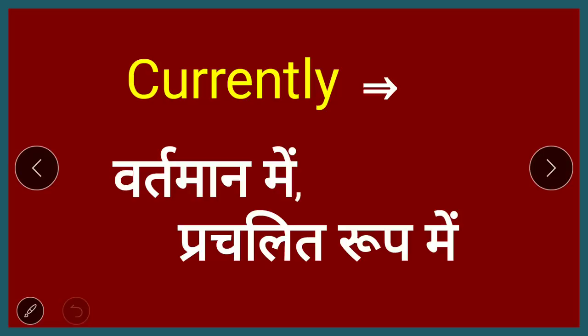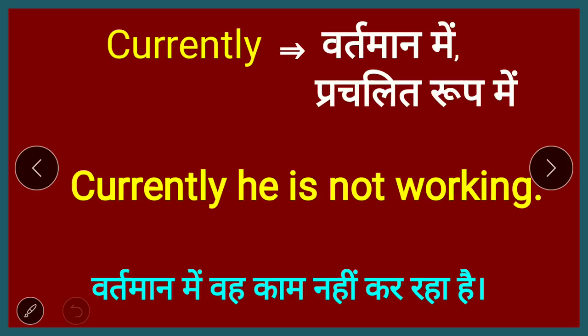The next word is 'currently,' meaning in the present moment. When you have to tell someone about what is happening right now, you use 'currently.' For example: 'He is not currently working.' That is how you use 'currently.'